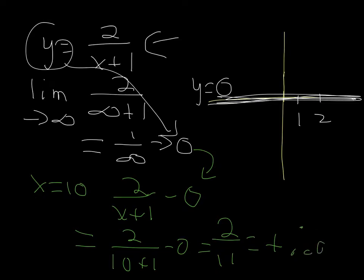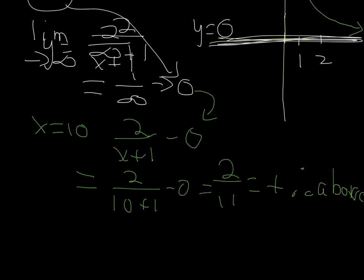And that tells us, in this case, that the graph stays above the asymptote. So as x is getting larger and larger, my graph is staying above that asymptote line. Now, if I do the same thing, only I do it with minus 10. If I do it with minus 10, then I'm going to get 2 over negative 9. Now, that's a negative, which tells me that the line stays below the asymptote for large negative values of x.